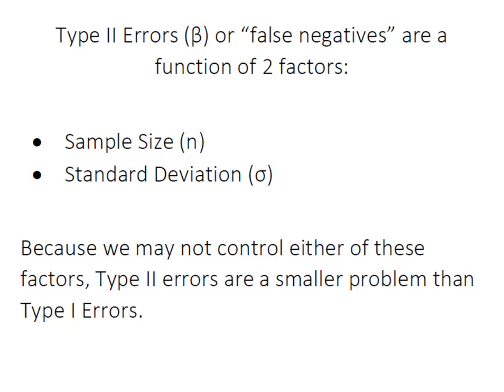Type II errors are a function of two factors: sample size and standard deviation. And you may not control either of those factors. There are many circumstances where researchers are unable to control sample size or standard deviation. And because of this, Type II errors are generally agreed to be a much smaller problem than these Type I errors.